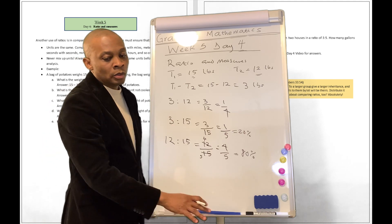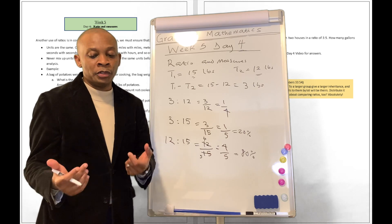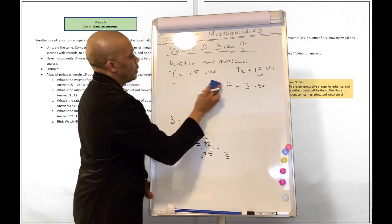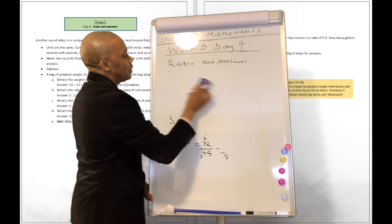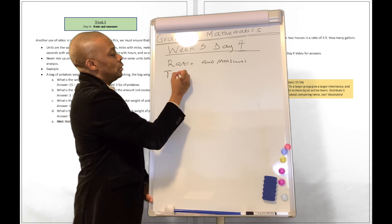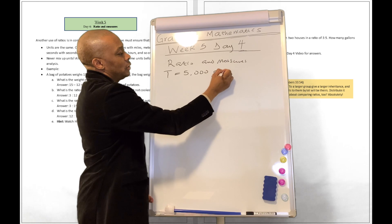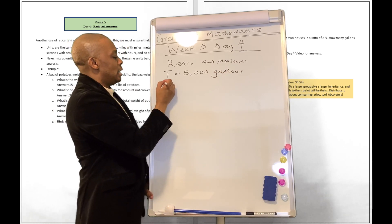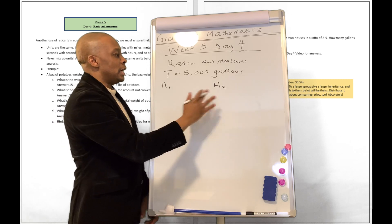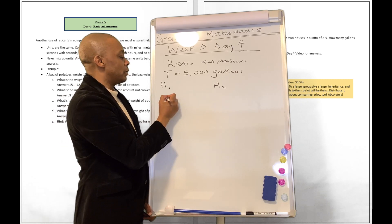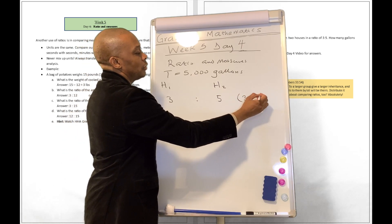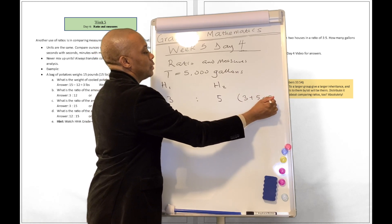Let's look at your homework for today. They said 5,000 gallons of water were distributed between two houses in a ratio of 3 to 5. How many gallons of water does each house get? It's a pretty simple example that we can use to master the concept of ratio analysis to volumetric measures. The total amount of water was 5,000 gallons.